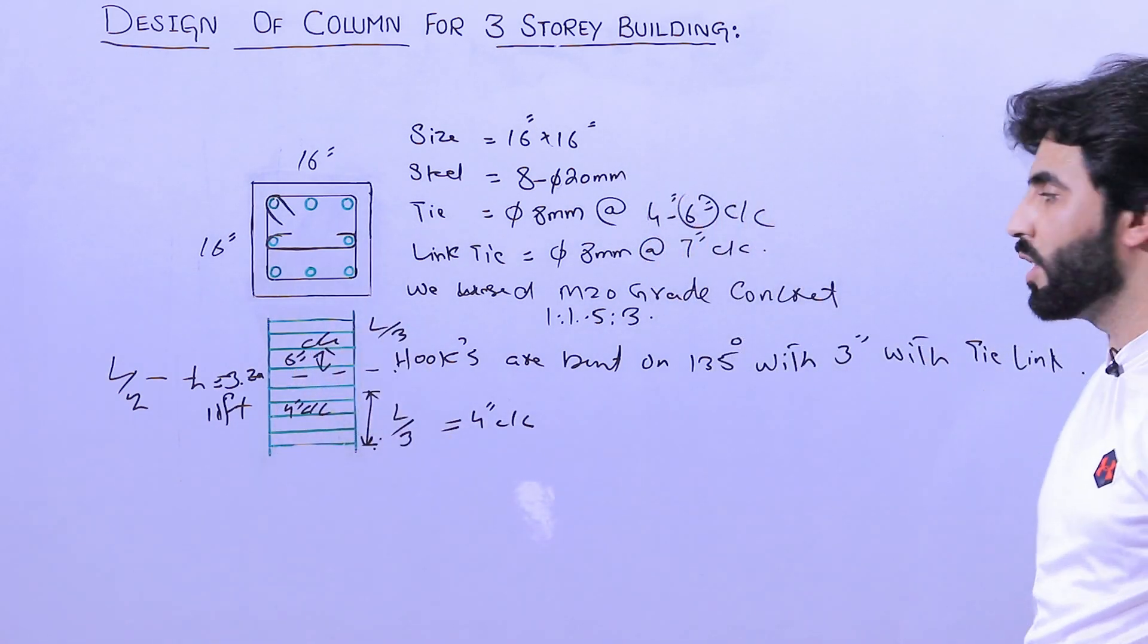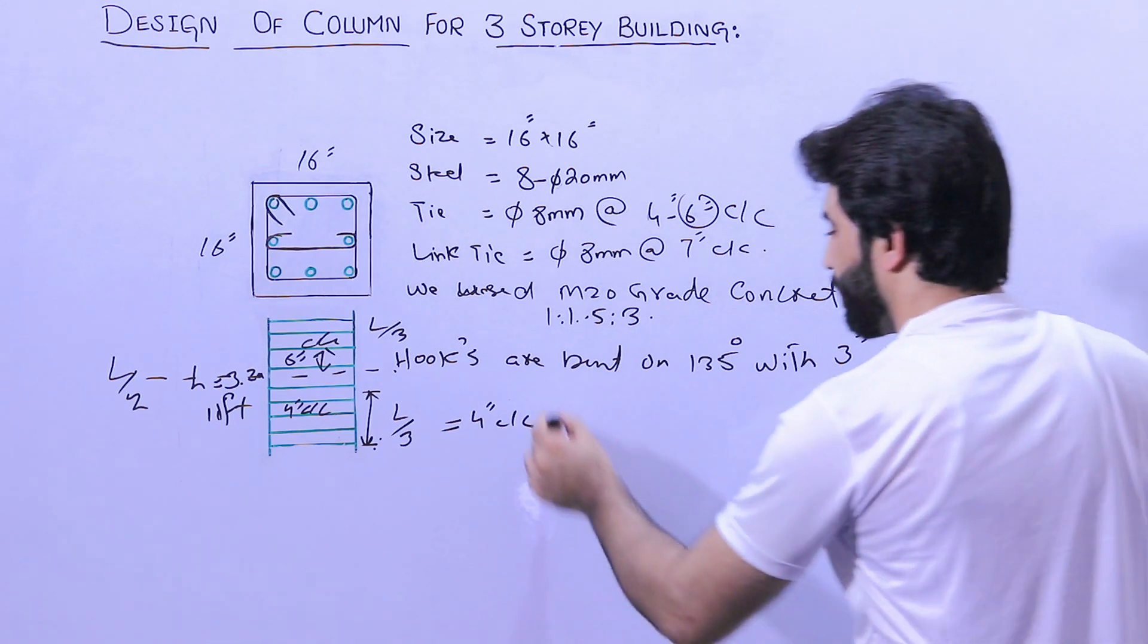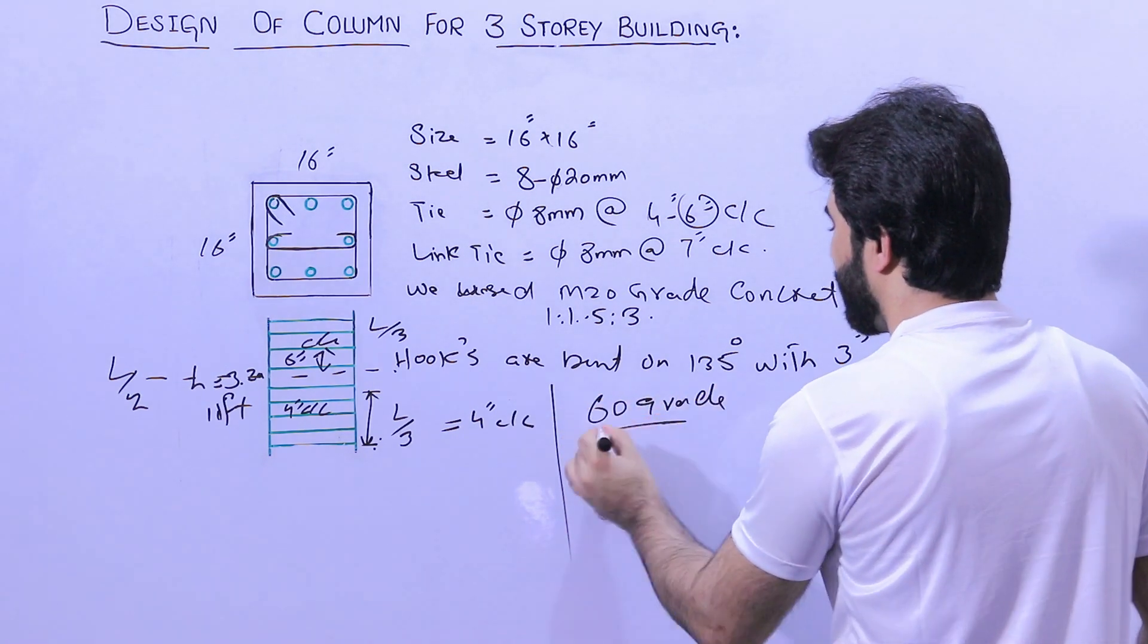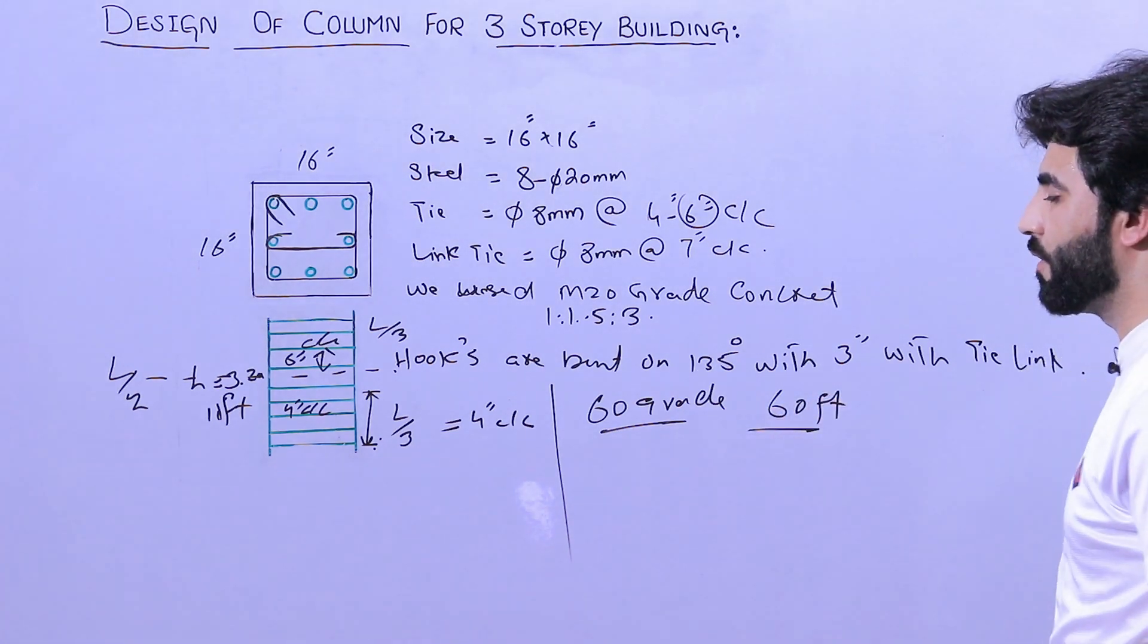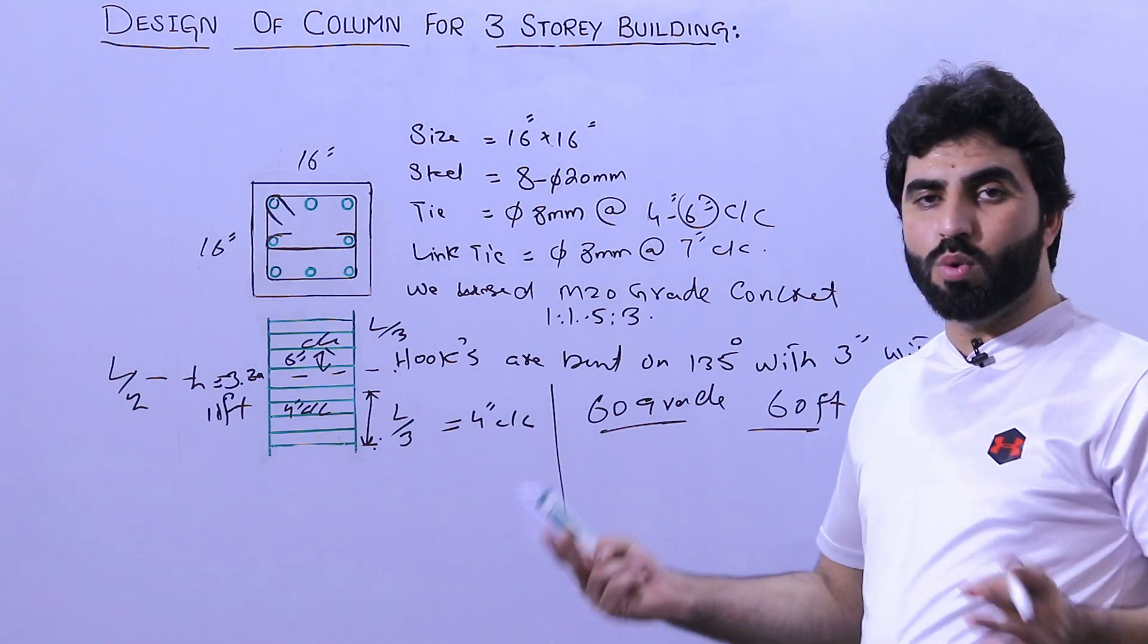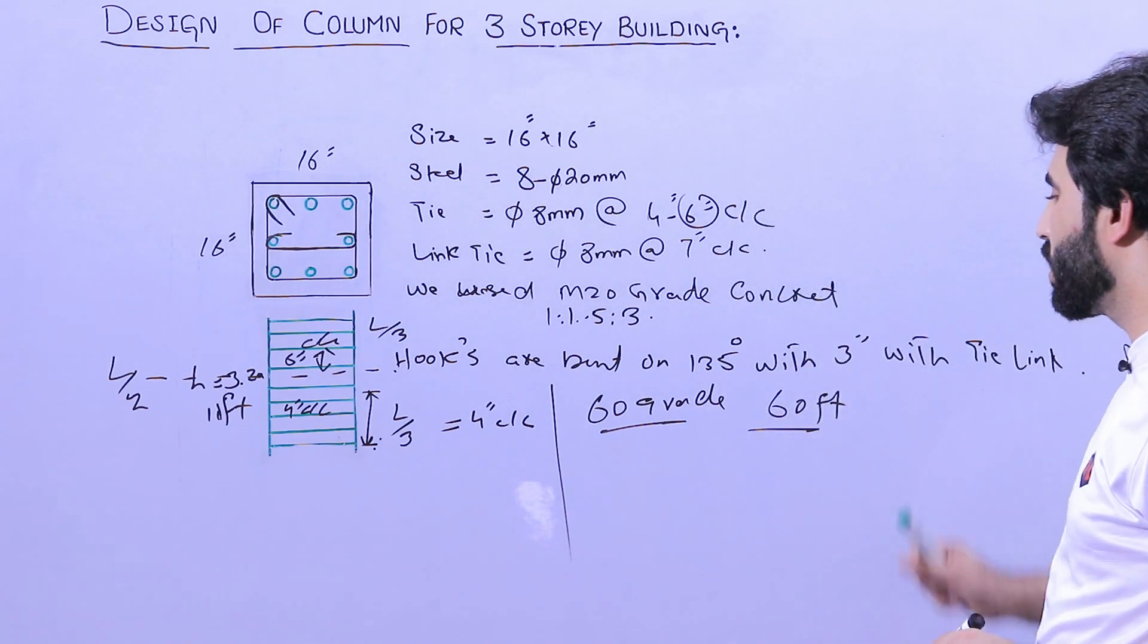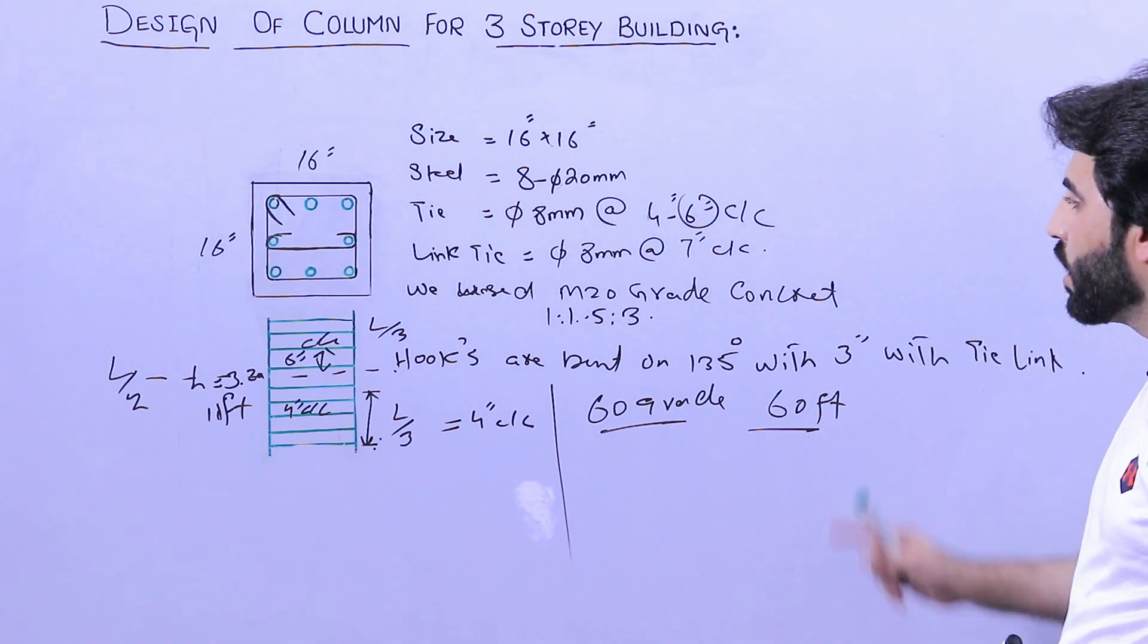These are the details for the ties. Next, here we used 60 grade steel rod where the length is 60 feet for each steel reinforcement. Don't use 40 grade steel rods if you are going more than two storey or double storey. If it's three storey or four storey, don't use less than 60 grade.